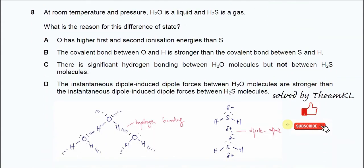Question 8. At room temperature and pressure, H2O is a liquid and H2S is a gas. It's a different state. These two compounds have different states because of one reason, just only one reason. You need to link to the IMF, intermolecular force. Because there are intermolecular force differences, it will give different states.